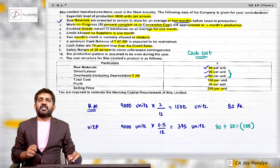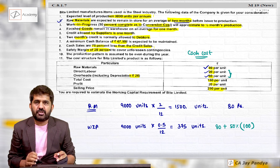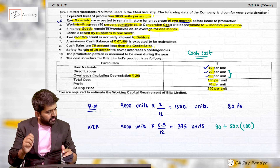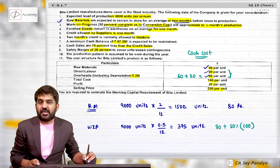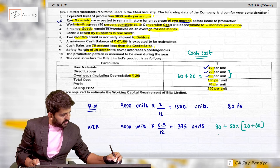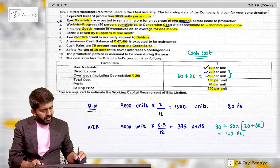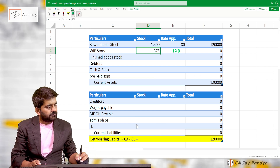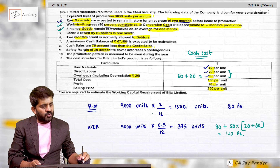Depreciation is a non-cash item, and it relates to fixed assets which are not considered while calculating working capital requirement. So I normally do it on a cash cost basis. Instead of ₹100 conversion cost, labor is ₹20 full and overhead is only ₹60 (excluding ₹20 depreciation). So WIP rate = ₹80 raw material + ₹20 labor + ₹60 overhead = ₹120 per unit (excluding depreciation). WIP: 375 units at ₹120 = ₹45,000.